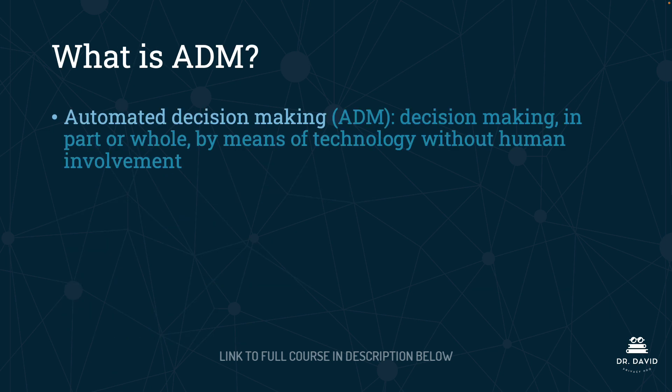So what is automated decision making, or ADM? This is decision making in part or whole by means of technology without human intervention. It does not state artificial intelligence specifically — it simply means that when we're using technology in part or whole to make a decision without human intervention, we have the use of automated decision making.